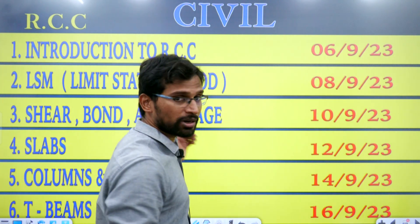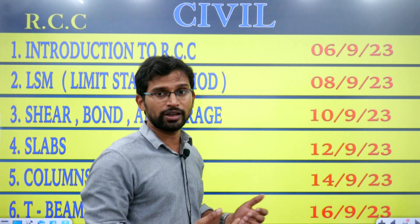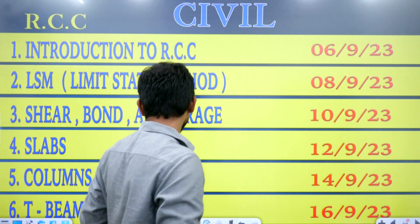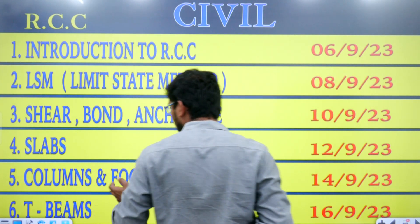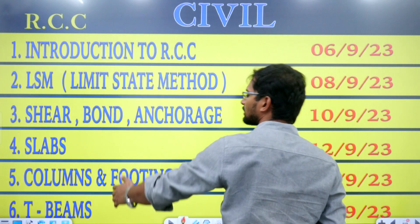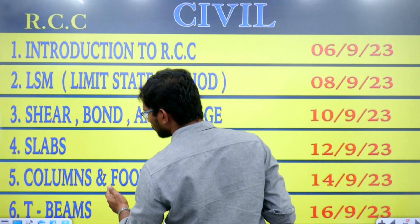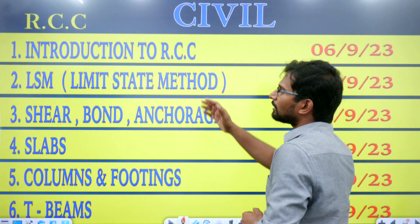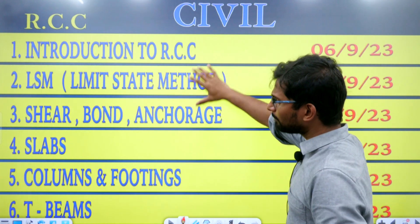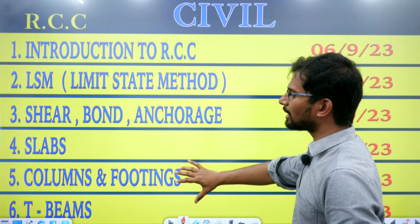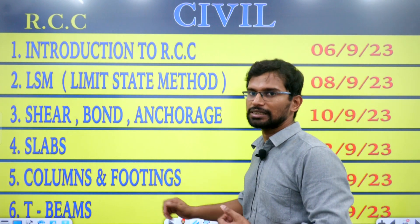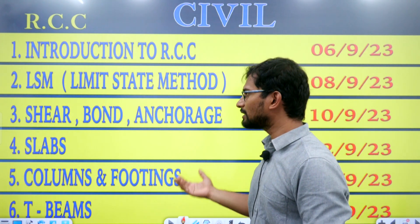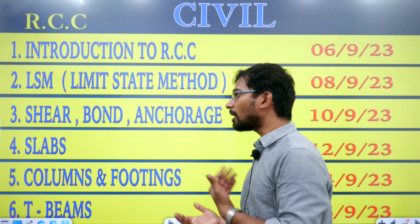Then we cover Slabs: one-way slabs, two-way slabs, and flat slabs. After that, Columns and Footings — in these sections we compare compression members and tensile members. We then expose the design questions chapter-wise.